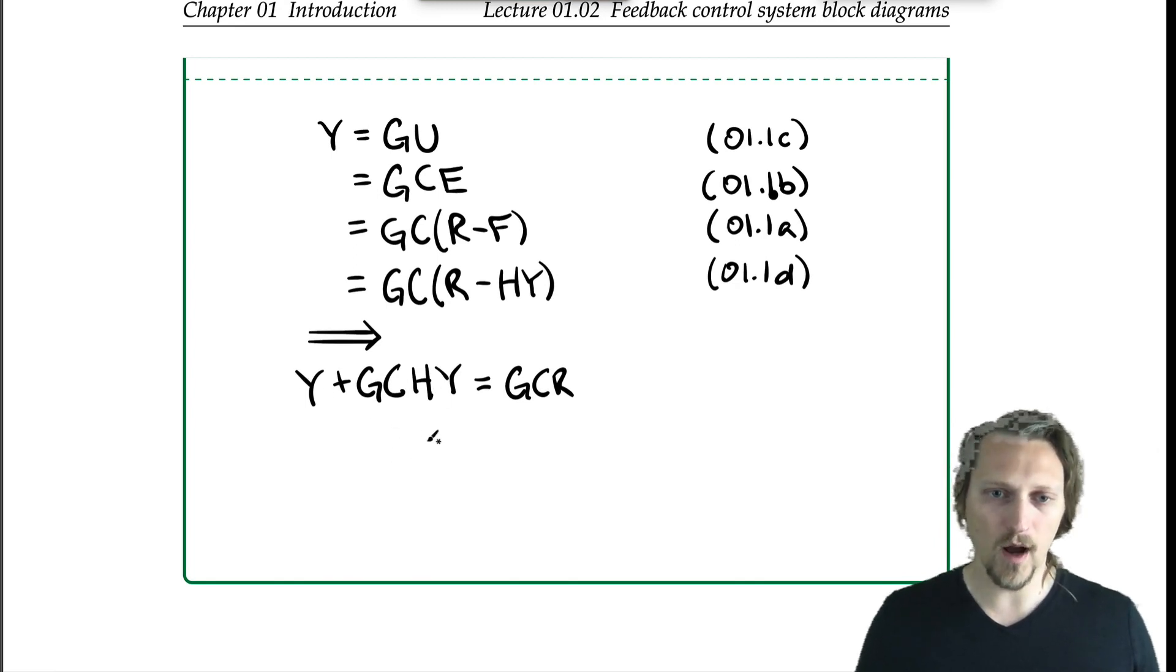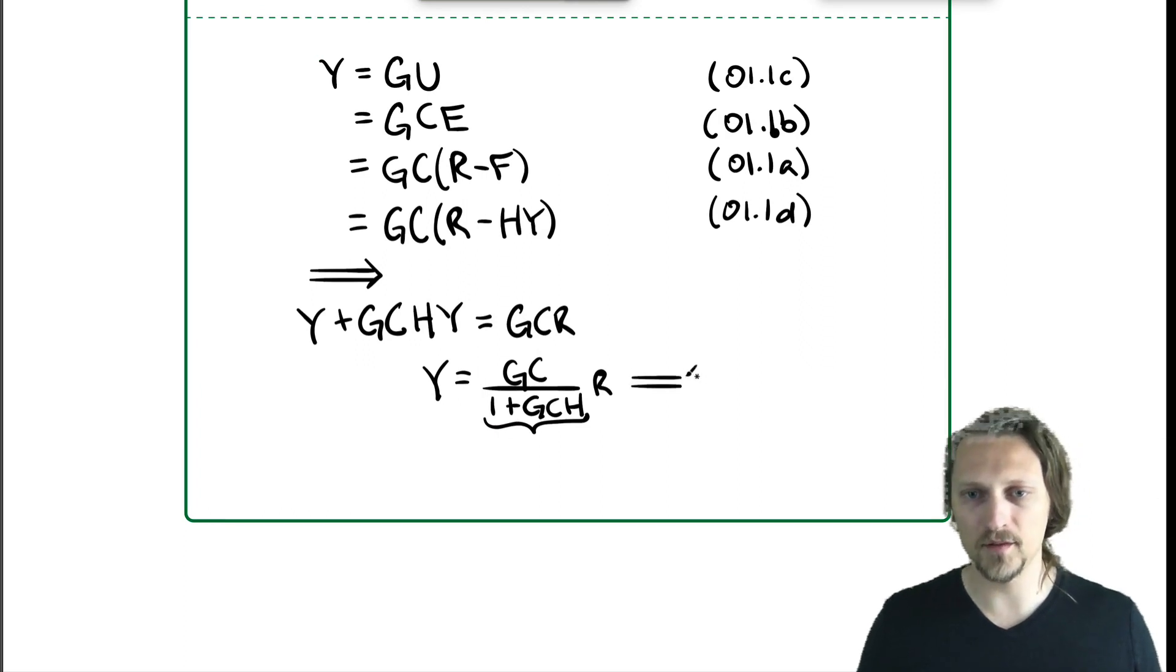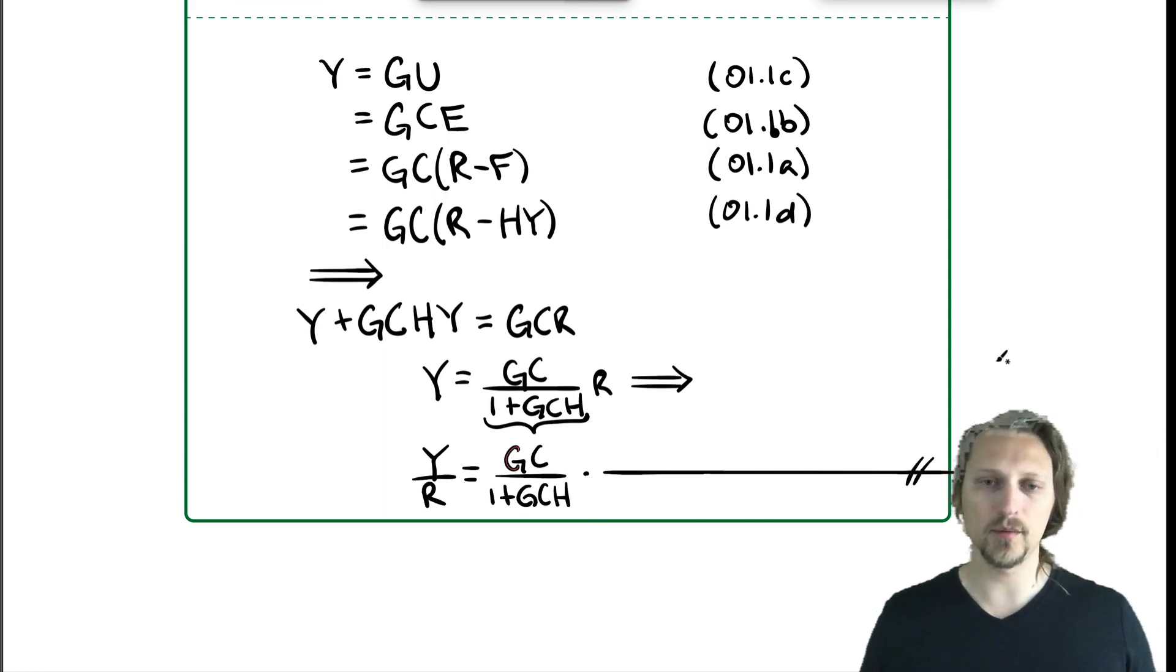So we have Y equals GC over (1 plus GCH) times R. I broke the R off from the numerator because we want the relationship between Y and R, and that makes this the transfer function we're looking for. We can complete the final step by dividing both sides by R, so we have Y over R, which is the definition of the closed-loop transfer function, equals GC over (1 plus GCH). That is the expression for our closed-loop transfer function.